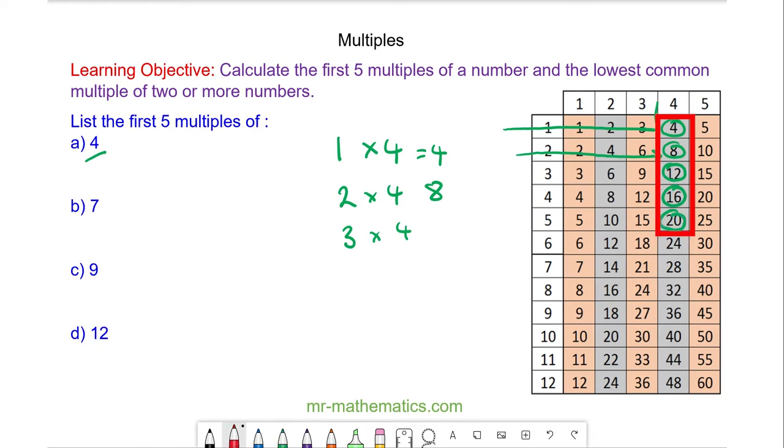The first five multiples of 4 are 4, 8, 12, 16 and 20.